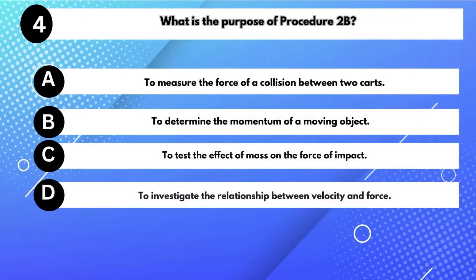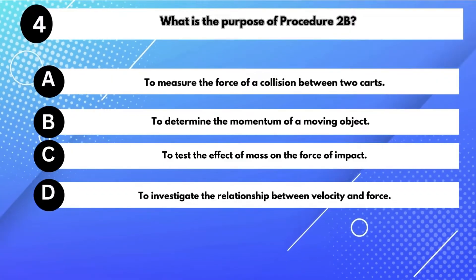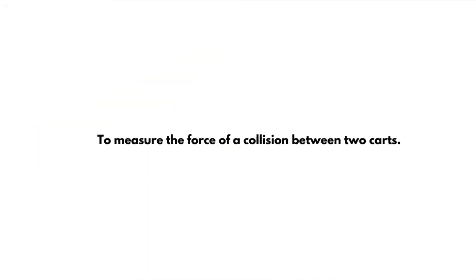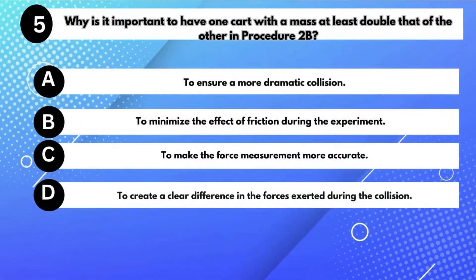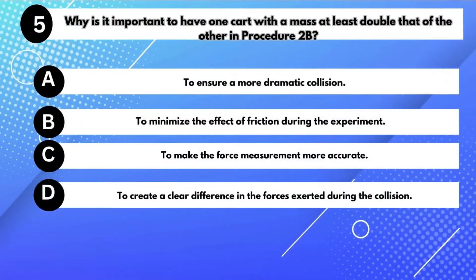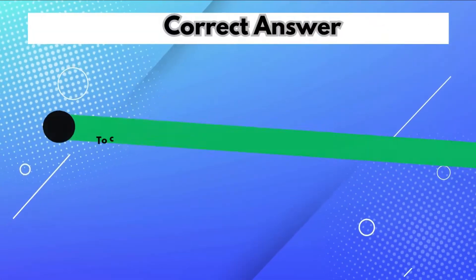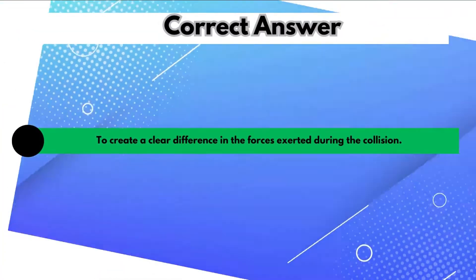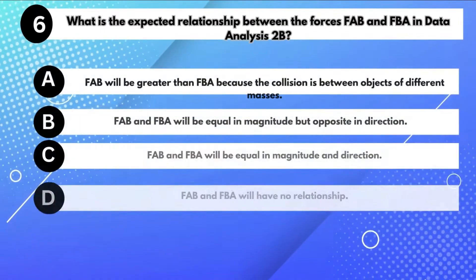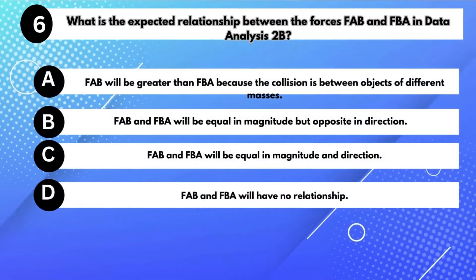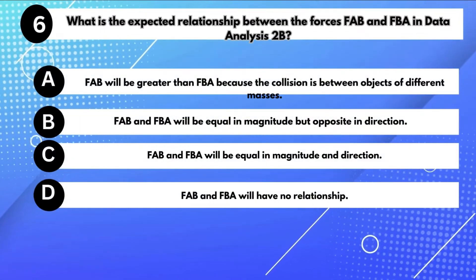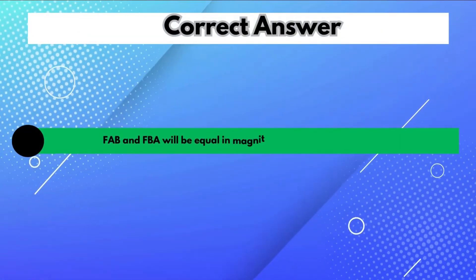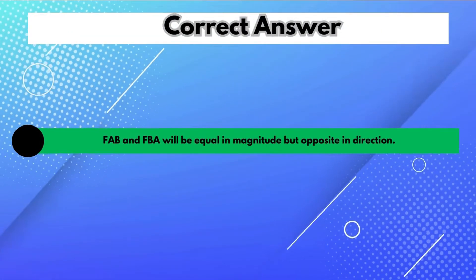What is the purpose of procedure 2B? Answer A: To measure the force of a collision between two carts. Why is it important to have one cart with a mass at least double that of the other? Answer D: To create a clear difference in the forces exerted during the collision. What is the expected relationship between FAB and FBA in data analysis 2B? Answer B: FAB and FBA will be equal in magnitude but opposite in direction.